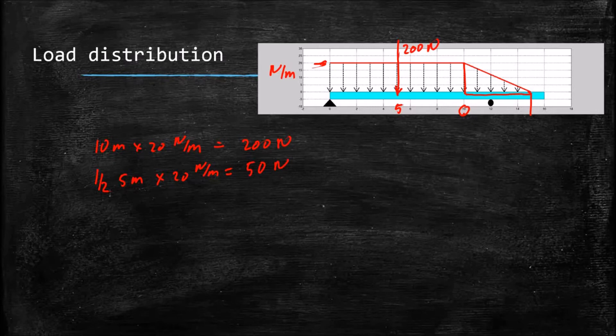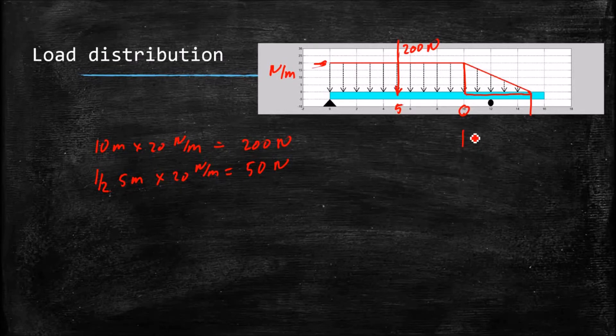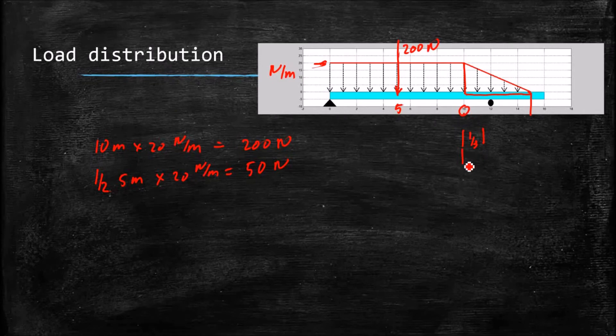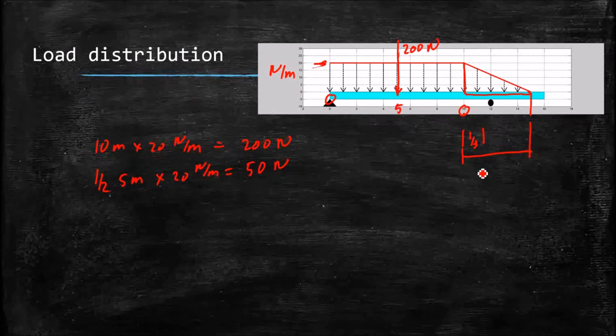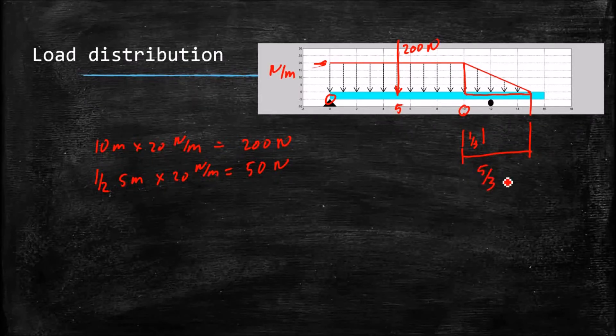And looking in the table in the back, we find that the centroid is located at one-third the distance of this total distance. Measuring from the left edge of the triangle, this distance here to be 5 thirds meters.